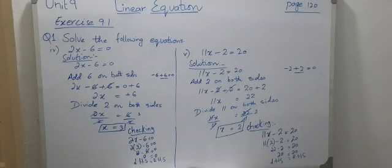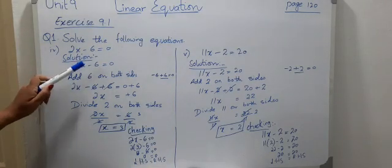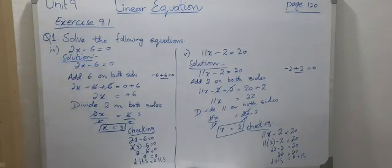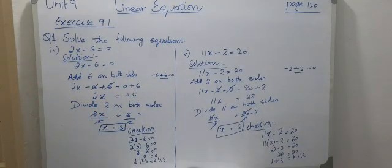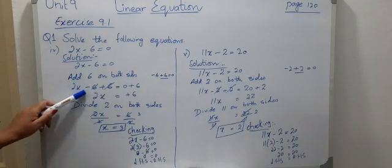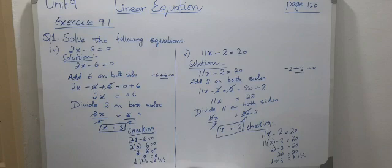A different equation: 2x minus 6 equals 0. Minus 6 is a constant number — we have to remove it. The opposite of minus 6 is plus 6, so we add 6 on both sides: 2x minus 6 plus 6 equals 0 plus 6. Since 0 plus 6 equals 6, we get 2x equals 6.